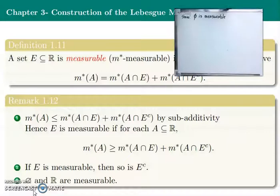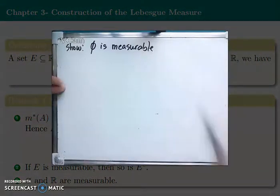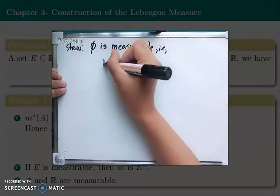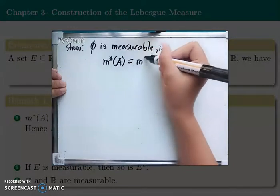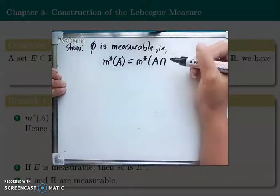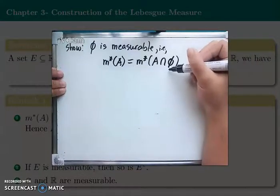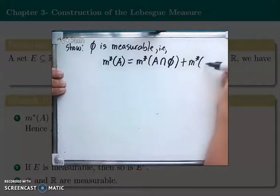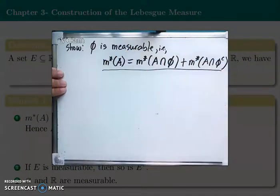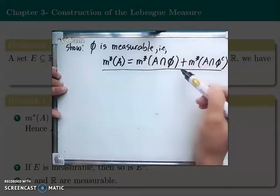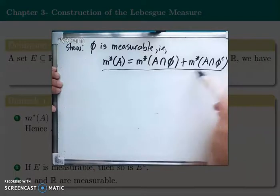Now, the empty set ∅ and ℝ are measurable. Let's show first that ∅ is measurable. We will show that λ*(A) = λ*(A∩∅ᶜ) + λ*(A∩∅). Because this set ∅ is what we want to show is measurable, we replace E by ∅. So we want to show: λ*(A) = λ*(A∩ℝ) + λ*(A∩∅). We can work backward from this.